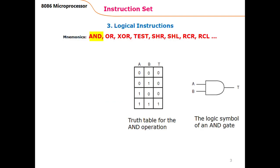In this lecture, some logical instructions are discussed. The first logical instruction is AND. The truth table for the AND operation is given here.